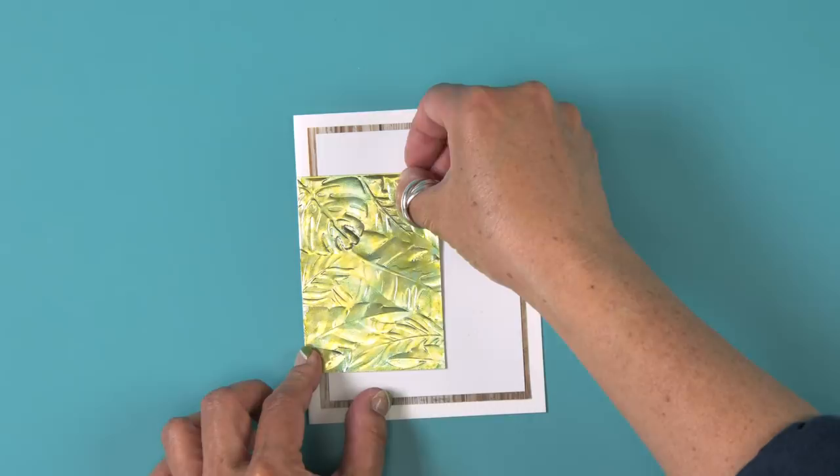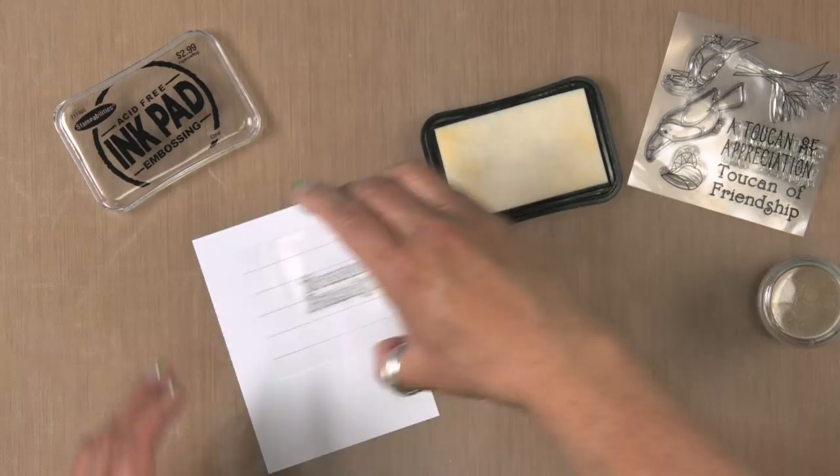Using the embossing ink pad, stamp the sentiment on white cardstock and heat emboss using the gold embossing powder.